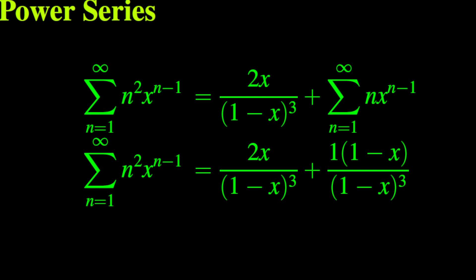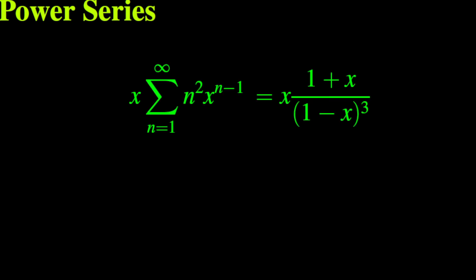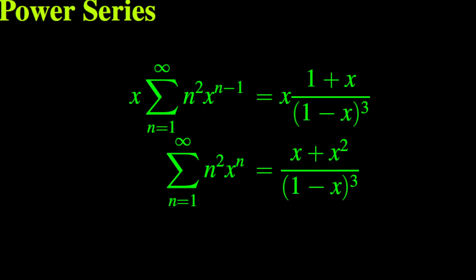We reduce the right-hand side to the same denominator, so the new right-hand side is 2x over (1 minus x) cubed, plus (1 minus x) over (1 minus x) cubed. After simplifying, the sum from n equals 1 to infinity of n squared times x to the power n minus 1 equals (1 plus x) over (1 minus x) cubed. We then multiply both sides by x and obtain: the sum from n equals 1 to infinity of n squared times x to the power n equals (x plus x squared) over (1 minus x) cubed.